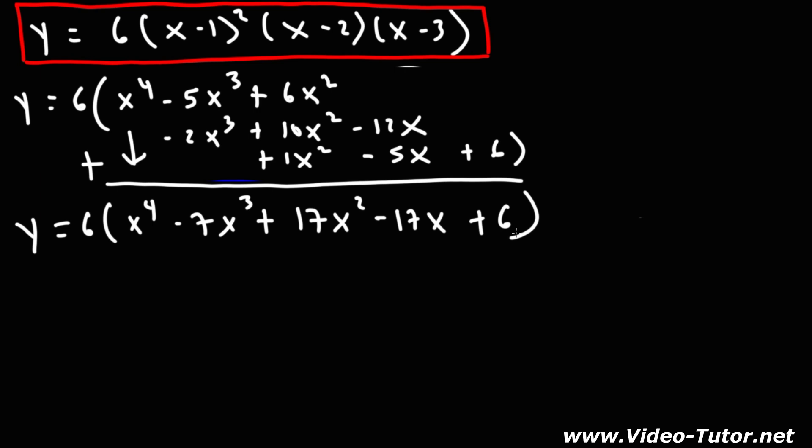Now the last thing we need to do is distribute the 6. So it's 6x to the fourth, 6 times negative 7 is negative 42x cubed. 6 times 17 is 102, so this is positive 102x squared, and then negative 102x. Finally, 6 times 6 is 36.